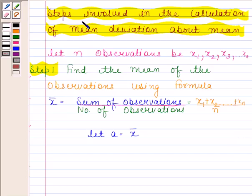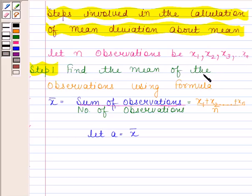Now we are going to learn the steps involved in the calculation of mean deviation about the mean. Let N observations be X1, X2, X3, and so on, Xn. In the first step, we find the mean of the observations using the formula: X bar equals the sum of observations divided by number of observations, that is X1 plus X2, and so on, plus Xn upon N.